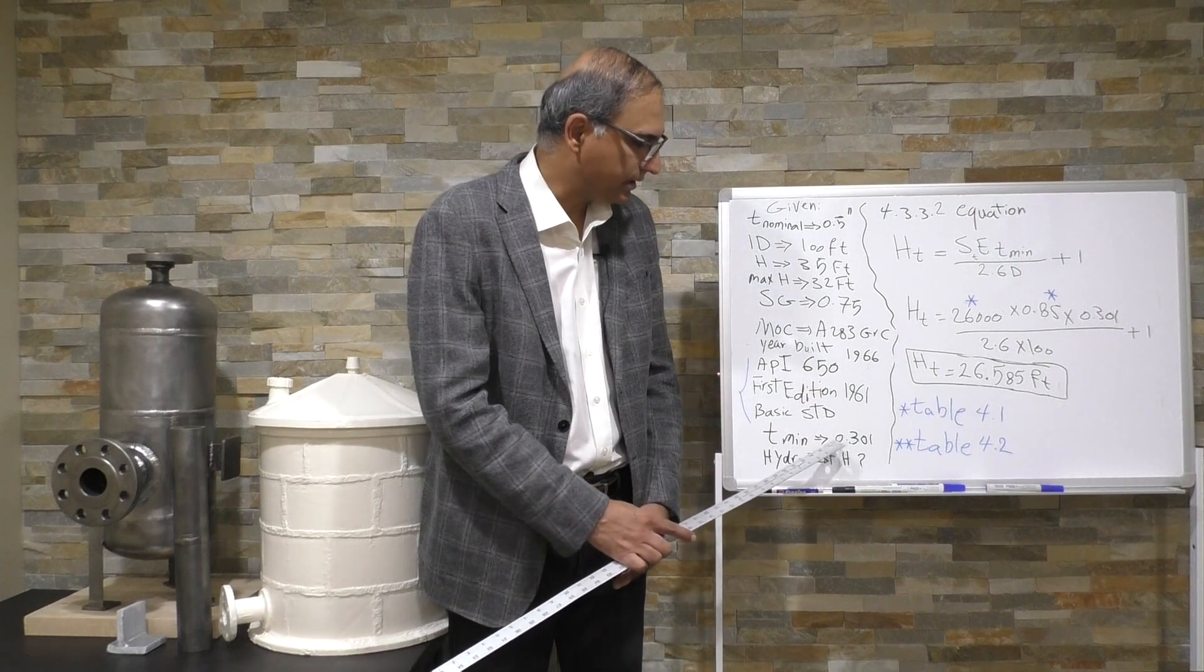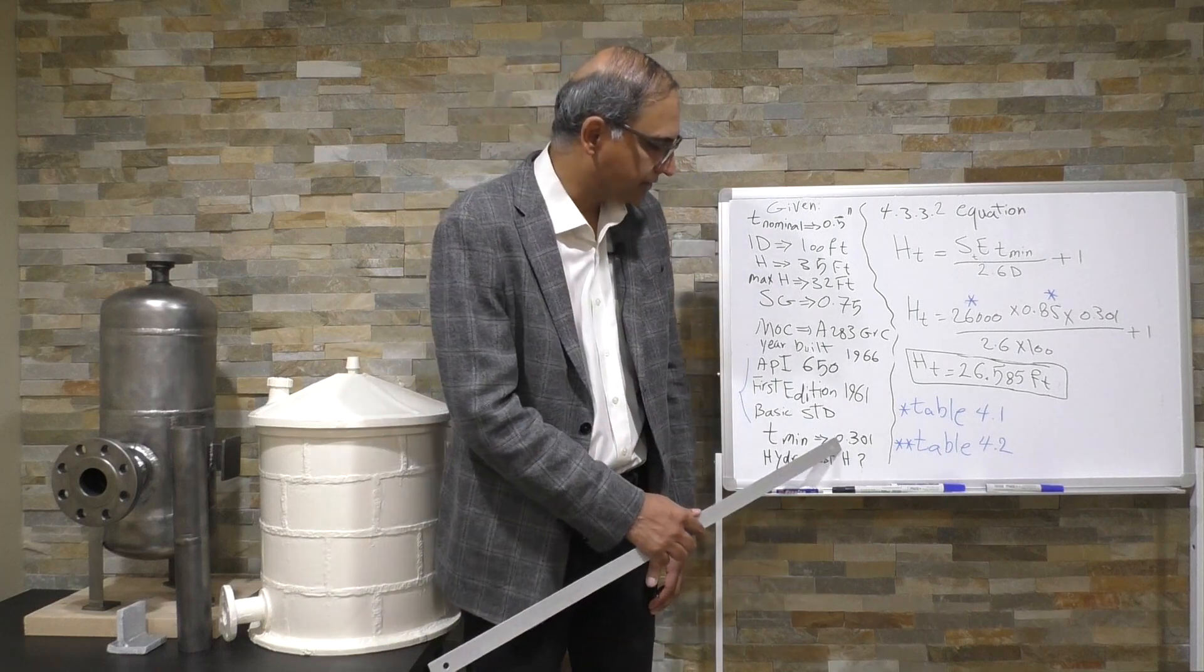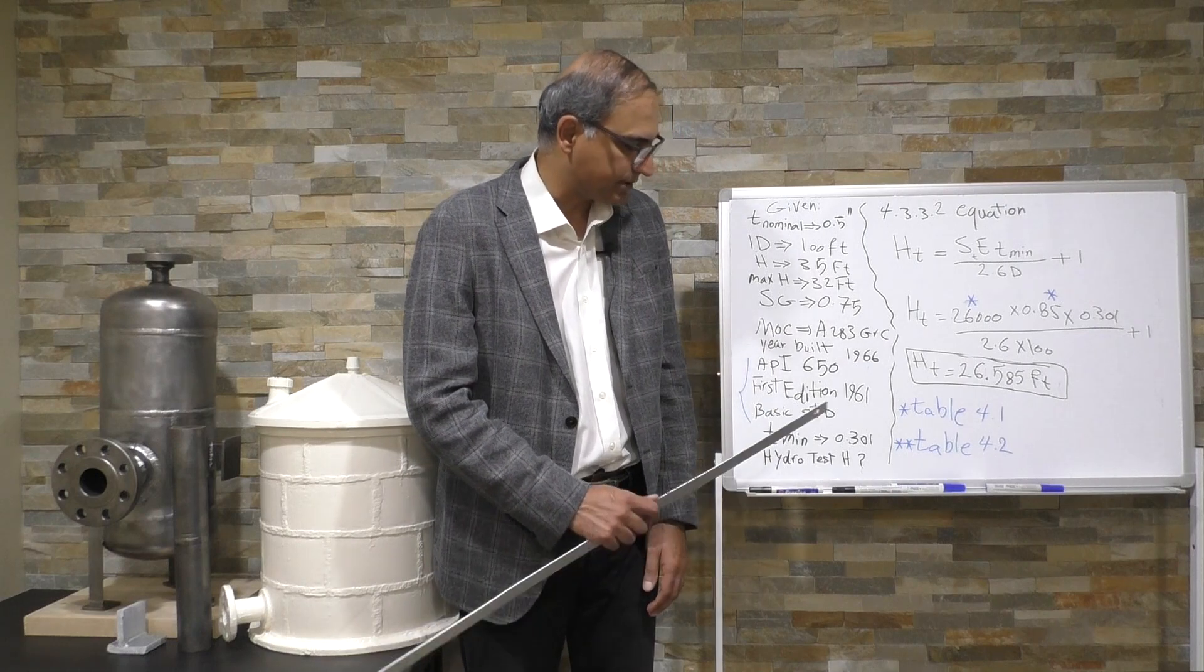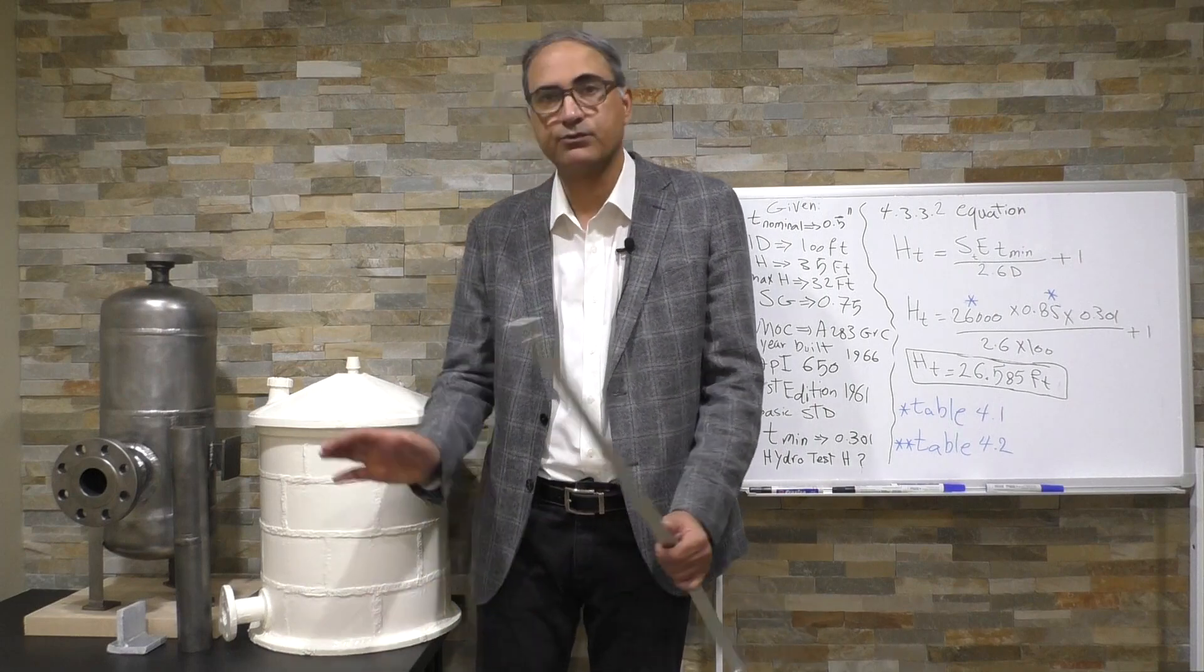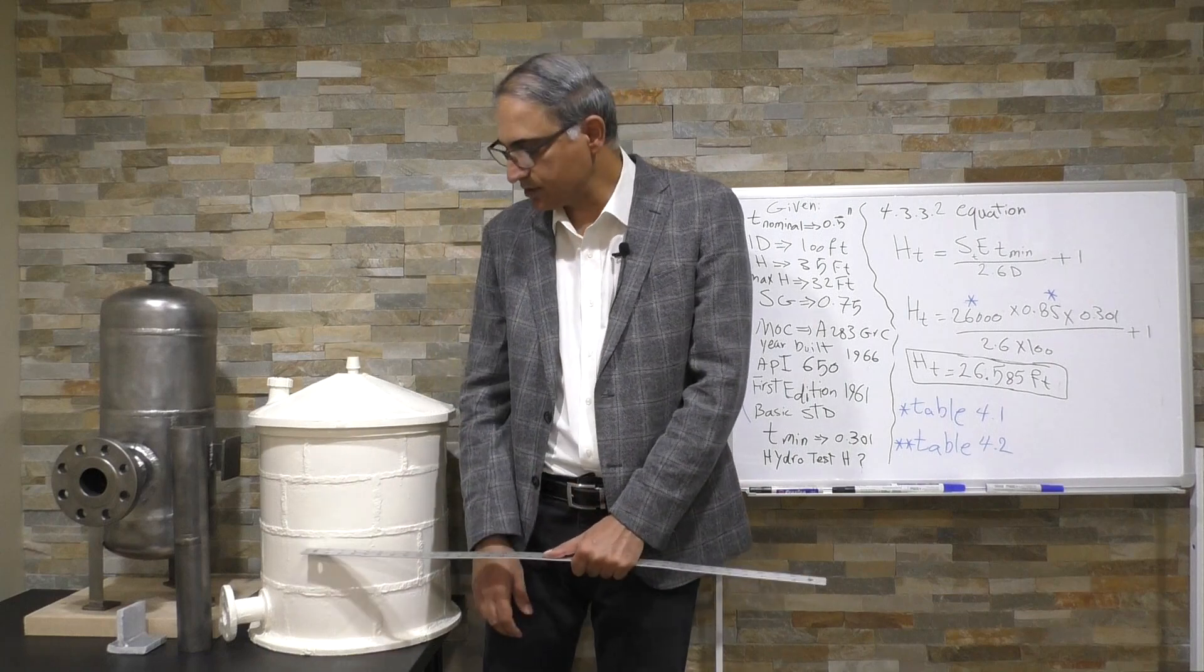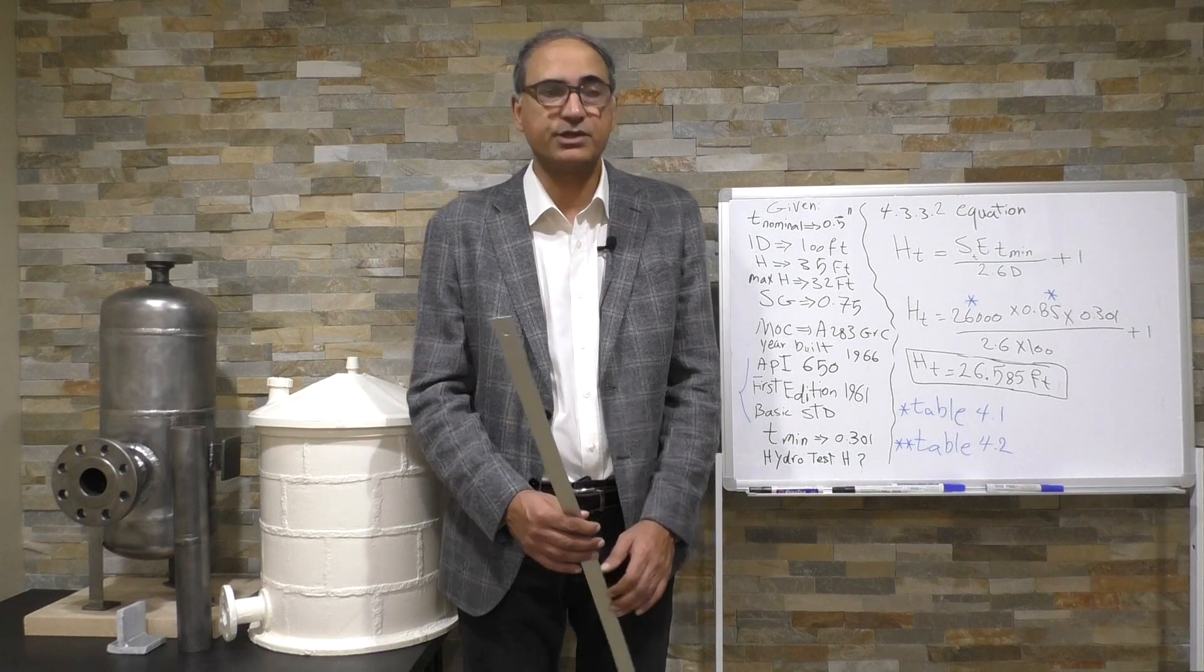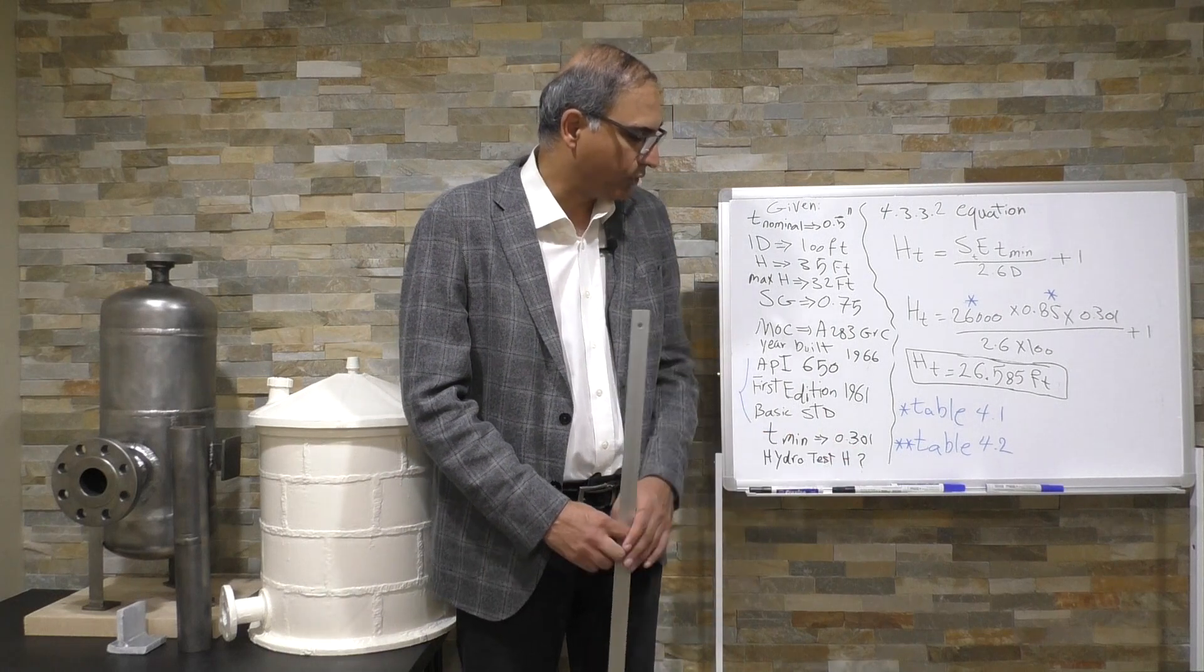Minimum required thickness for this first shell course is 0.301 inch, and the question asks us to calculate the hydrostatic test height. Consider this was in service since 1966, and we made an internal inspection, and we found that our wall thickness on the first shell course is way below 0.301.